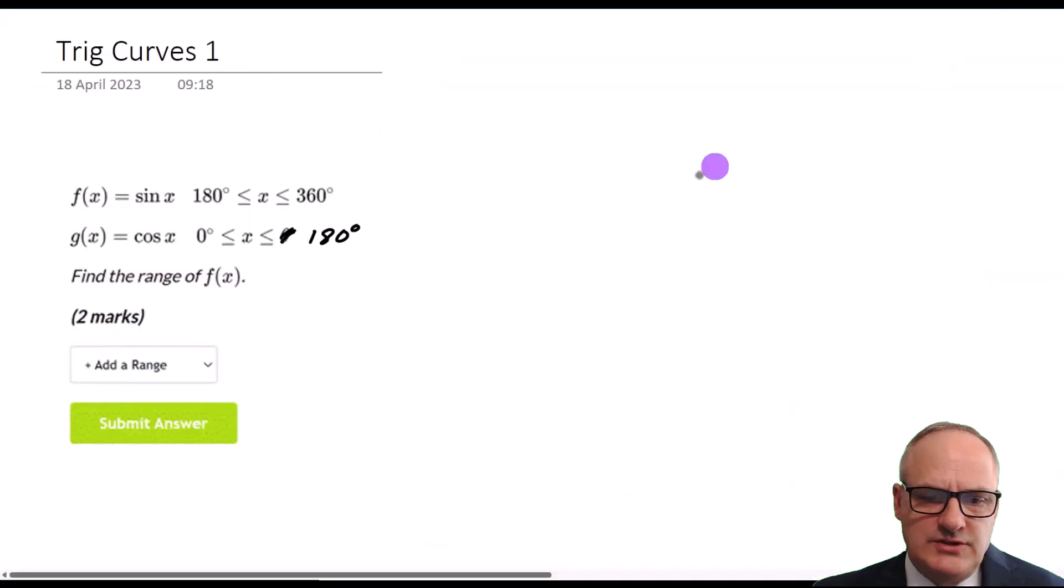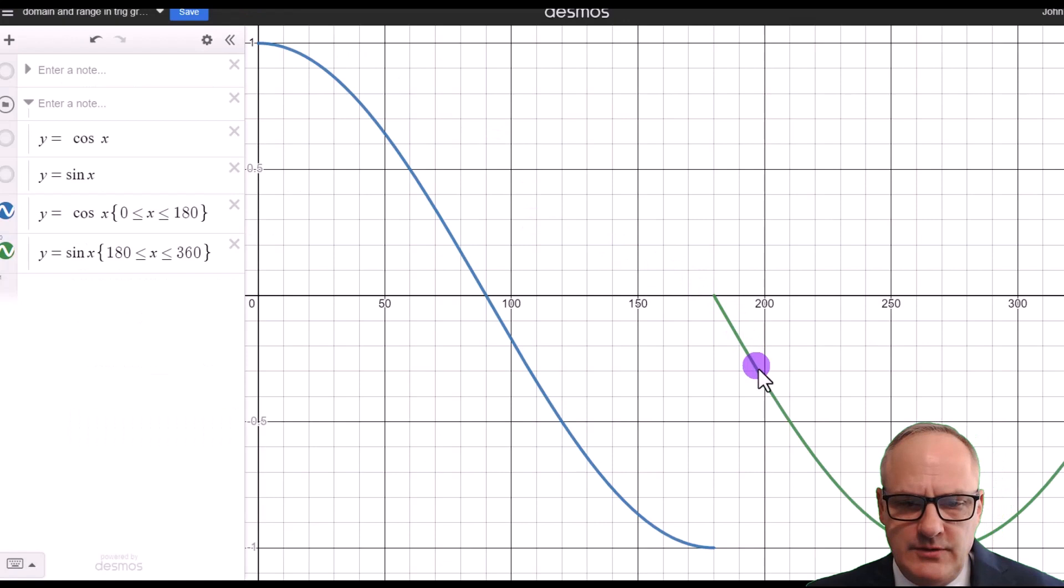And if we go back to our question, it asked us to work out the range for f(x), the sine curve. Let's go back to our sine curve and we look at that and we can see there's our domain between 180 and 360.